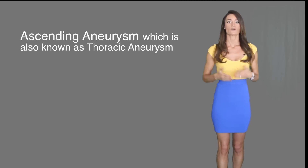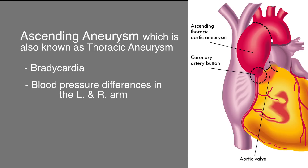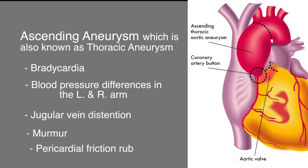There are many different types of aneurysms depending on the location and shape of the aneurysm, with different signs and symptoms associated with each. One is ascending aneurysm, which is also known as thoracic aneurysm. Signs and symptoms of this type include bradycardia, blood pressure differences between the left and right arm, jugular vein distension, murmur, and pericardial friction rub.